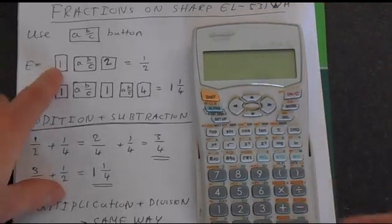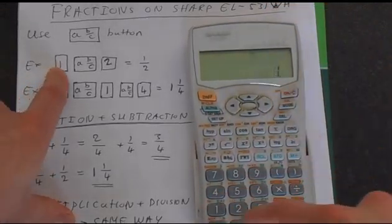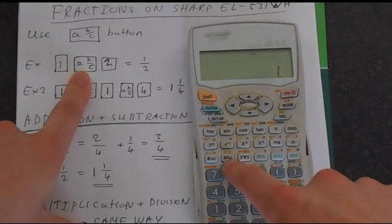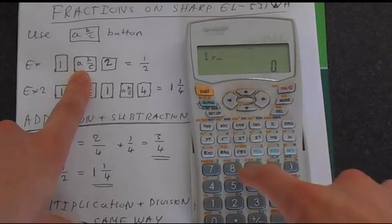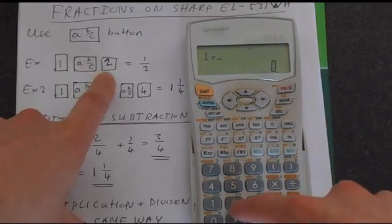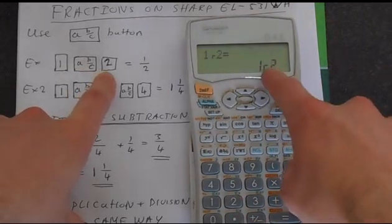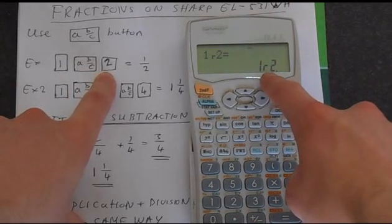So if you want to put in one half, you put in one, and then you press this AB over C button here, and that gives you this R, and then press 2. So this is how the calculator represents the number one half.